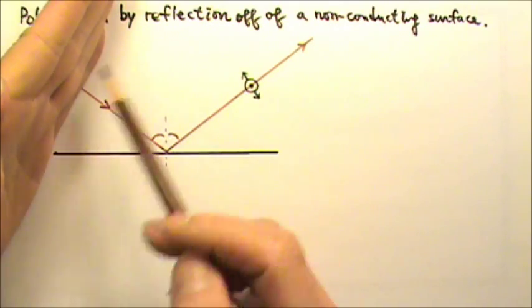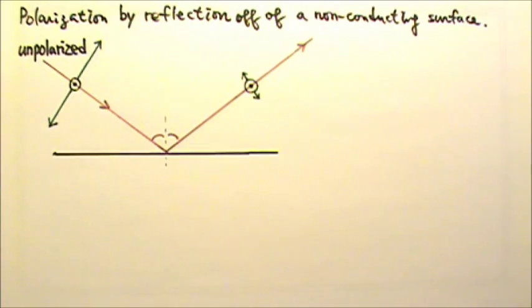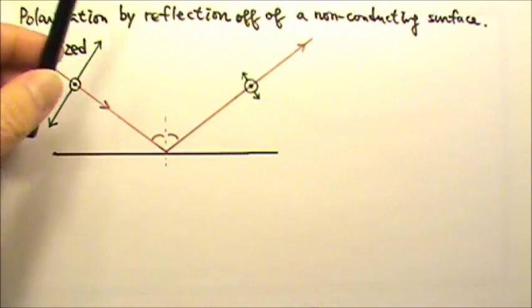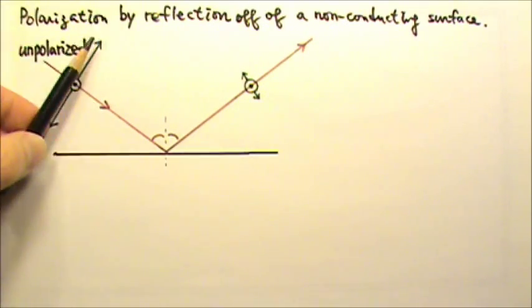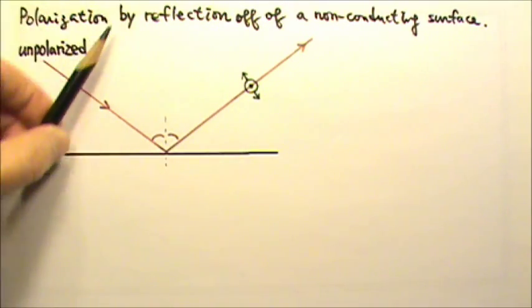Because an electric field in any of these directions can be broken into two components, one in a direction in and out of this page, and another direction parallel to this page, we can think of this unpolarized light as a mix of these two polarized lights.